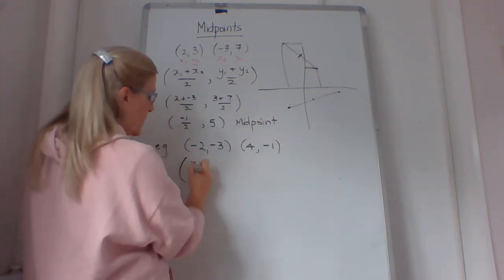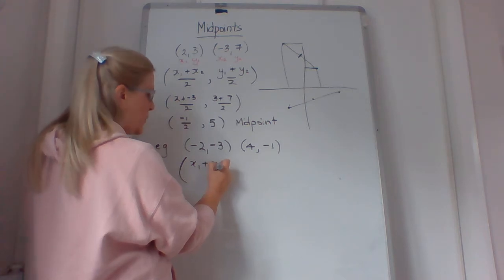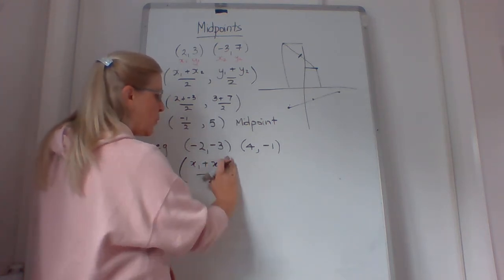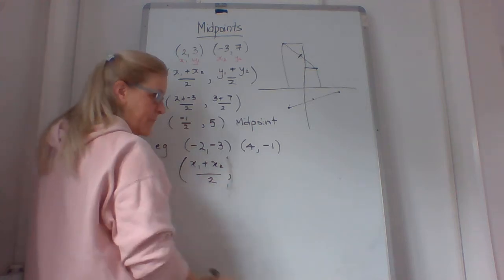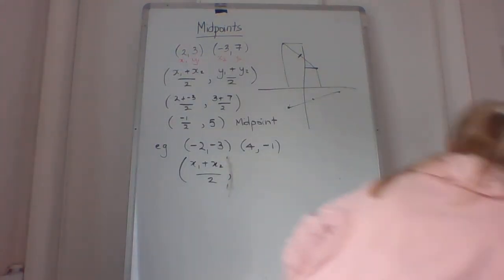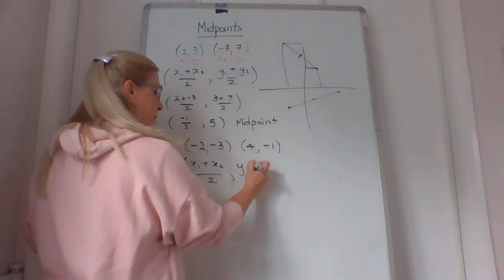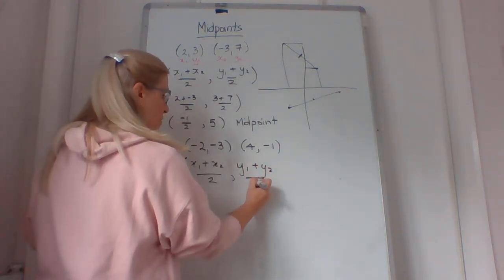So we've got (x1 + x2)/2, comma, because it's a coordinate, (y1 + y2)/2.